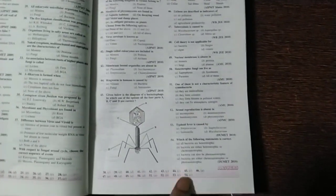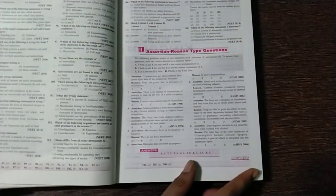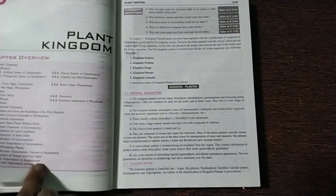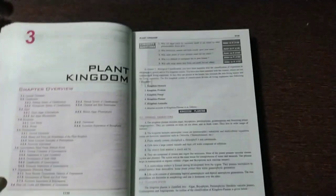You can see, answers are also given. Assertion reason type questions are there, with reason. Now, here it comes, plant kingdom.